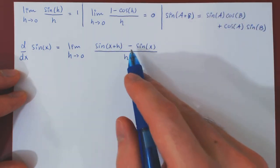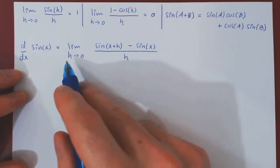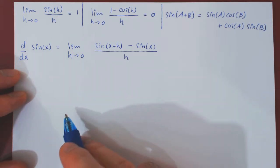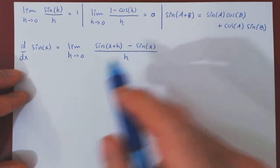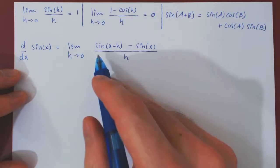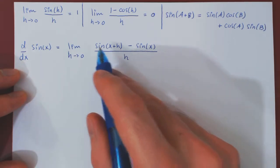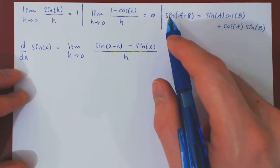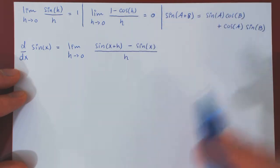f of x plus h minus f of x over h, as we are letting h approach 0, we will return the derivative of f, which in this case is sin of x. Well, the first step should be obvious, we will use our third result, namely, the trigonometric identity.